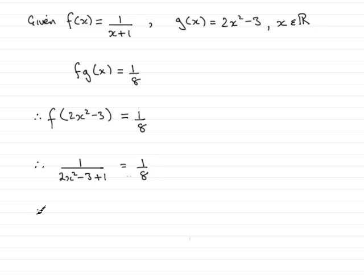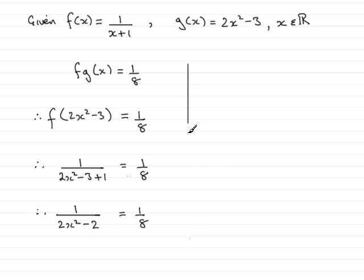At this point, I just want to tidy the denominator up. So we have 1 over 2x squared minus 2, and that equals 1 eighth.